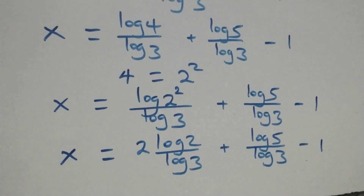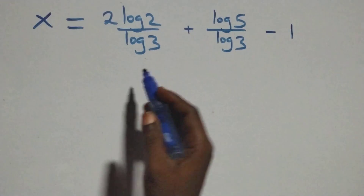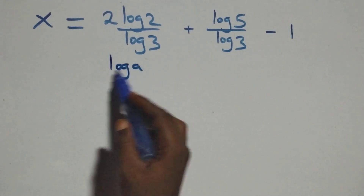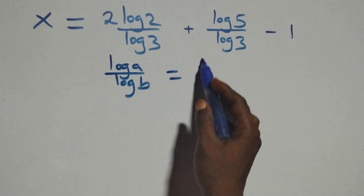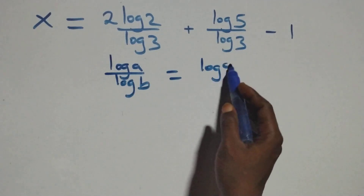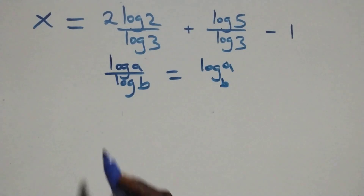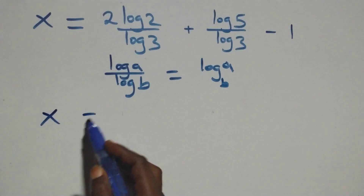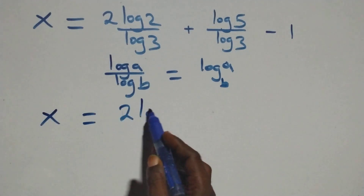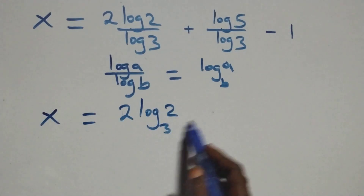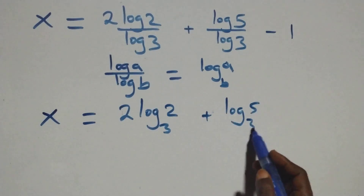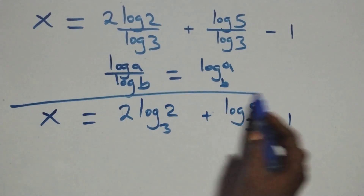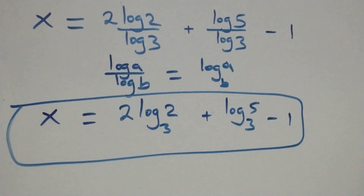The next step: apply the change of base formula. When we have log a over log b, this is the same as log a to base b. So all we have becomes x equals 2 log₃2 plus log₃5 minus 1. That is the value of x.